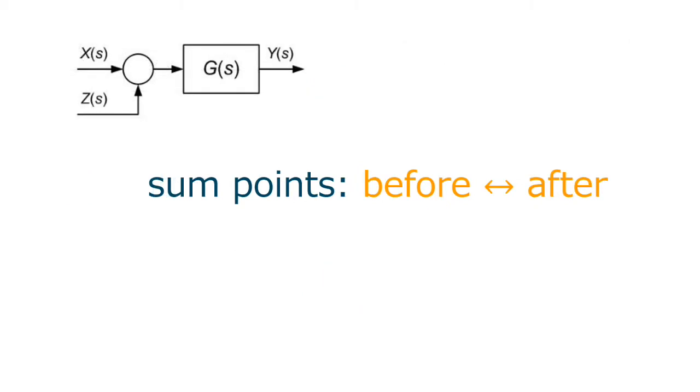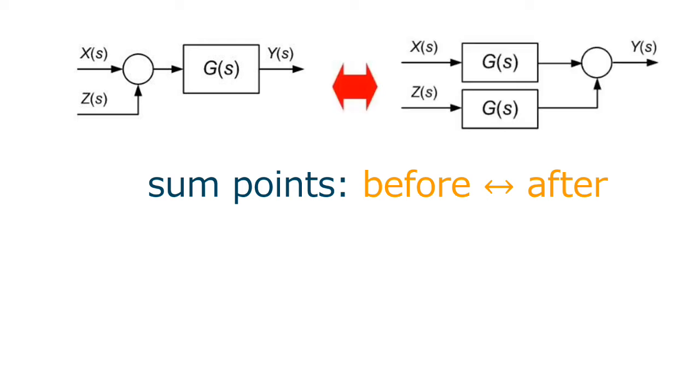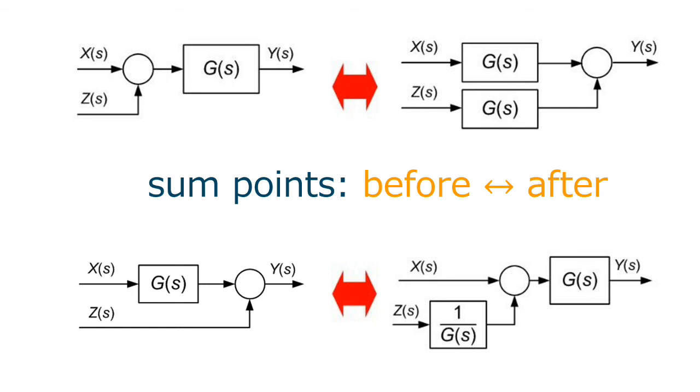Now the same for the sum points. If we want to put the sum point forward, this is the equivalent. And if we want to put the sum point backward, this is the equivalent. And again, you have to be sure that the signals before and after remain the same.